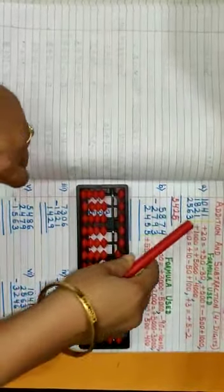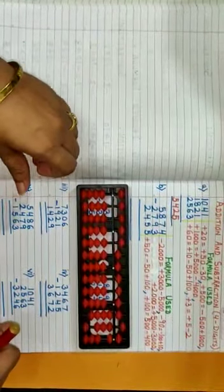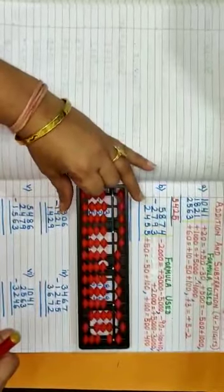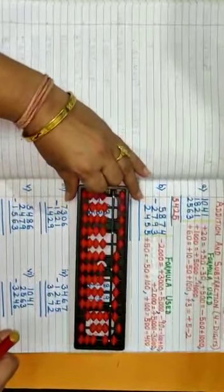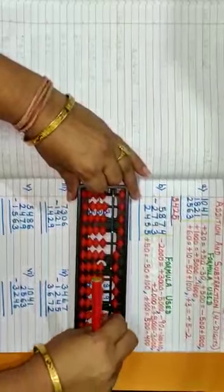Here are some sums. Now students, bring your Abacus scale. Good. Hold your Abacus scale with your left hand, your pencil with your right hand. Now clear the scale from right to left.